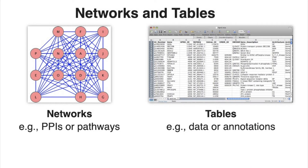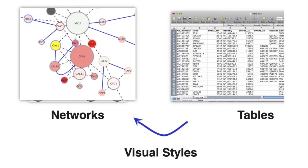Networks are tables — a table of nodes and their properties, and a table of edges and their properties. Many times, your work with networks starts with you loading a table of your experimental data onto the nodes in an existing network. Or perhaps you have determined a set of interactions in your experiment, in which case you create a network from those interactions. Once you have your data as attributes on the nodes and edges of your network, a powerful technique is to style your network so that it tells the story of your data. And that is where Cytoscape comes in.